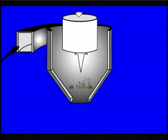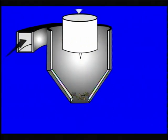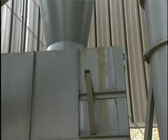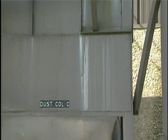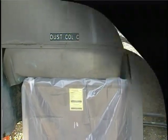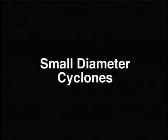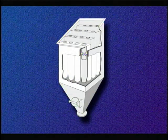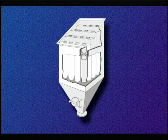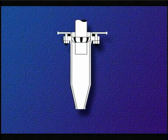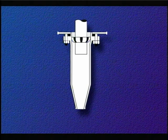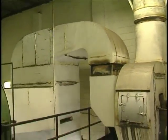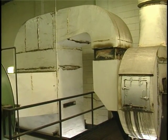Additional separation occurs as the gas stream reverses direction near the bottom of the cone and moves upward and out of the exit tube. Particles exiting the cone section are usually collected in a hopper before being removed for disposal. Small diameter cyclones are typically 6 to 12 inches in diameter and, like large diameter cyclones, consist of a constant diameter upper section and a tapering lower section.